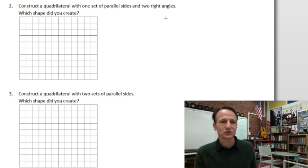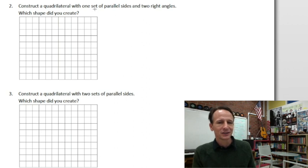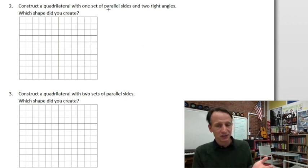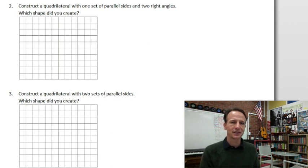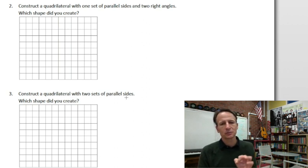This could be a square, we could draw a rectangle, we could draw a trapezoid just like we drew in number one. But since we already did that, and the same goes with number three - to construct a quadrilateral with two sets of parallel sides. Well that could be a rhombus, it could be a parallelogram, it could be a rectangle, it could be a square because it doesn't say anything about the angle.